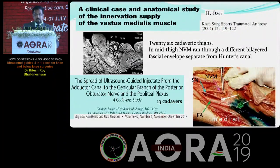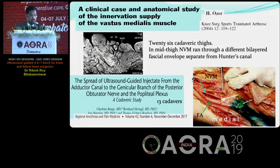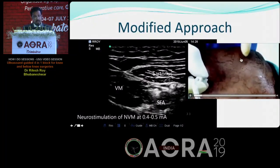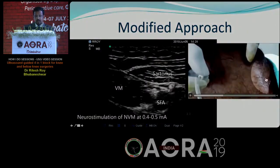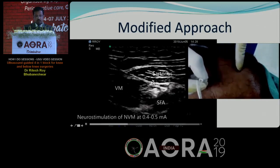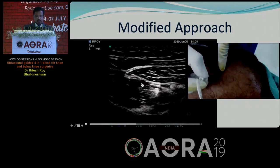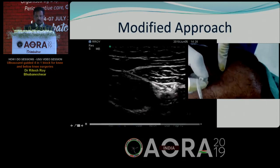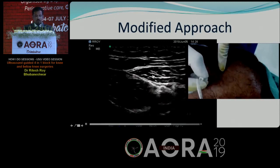After practicing this block for a while, we found that some patients were complaining of pain in the medial aspect of the knee. We then performed a cadaveric study and found that in many individuals, in the mid-thigh, the nerve to vastus medialis ran in a different bilayered fascial envelope separate from Hunter's canal. So we modified our technique: we use a peripheral nerve stimulator to stimulate the nerve to vastus medialis at 0.4 to 0.5 milliamperes, and after getting a good contraction, we inject around 5 ml of local anesthetic. The same needle then proceeds just above the superficial femoral artery to inject the remaining drug. Here you can see the two branches of the saphenous nerve — the tibial and infrapatellar branches — and then around another 30 ml of drug is injected.